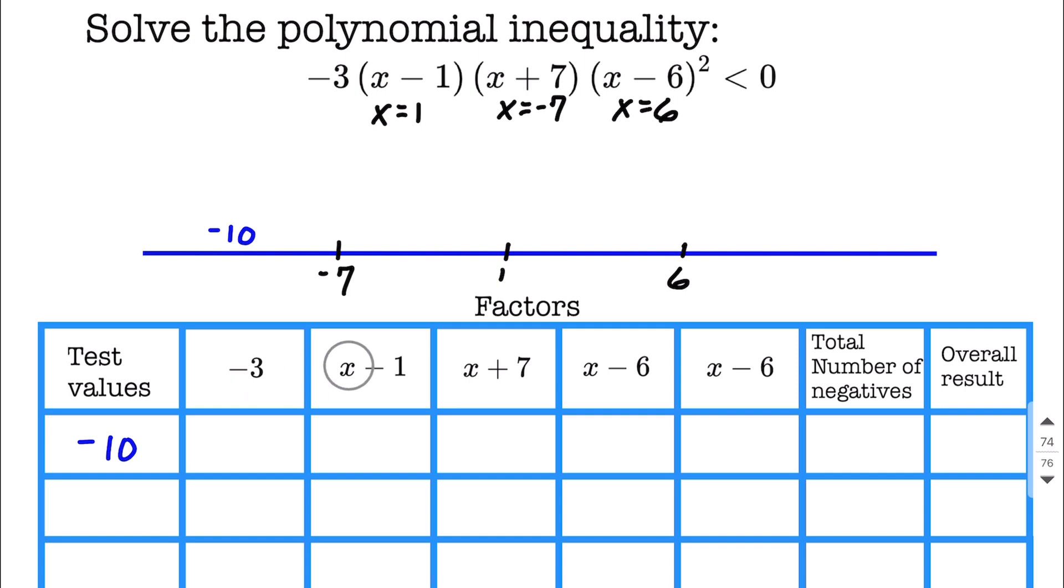We have our negative 3, the x minus 1, x plus 7. And you'll notice that I used x minus 6 twice, and the reason for that is because of this exponent. That exponent means that we have two copies of that factor multiplied together. So I went ahead and listed it out. There are other ways to accomplish the same goal, but I think for simplicity's sake, let's go ahead and treat it this way.